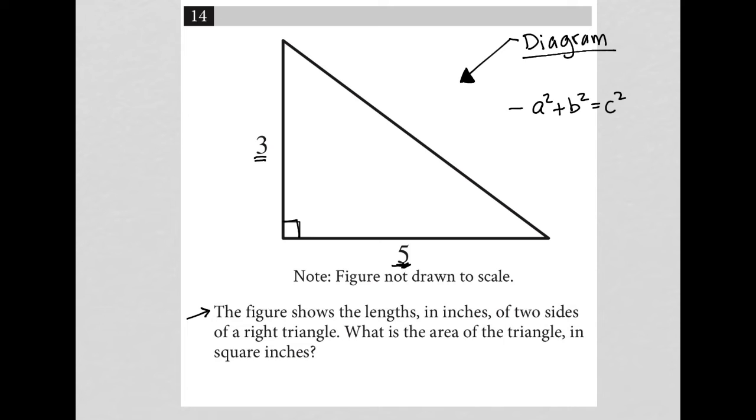Okay, so perfect. I don't need this. Why not? Because the area of a triangle is just one-half base times height. I know that my base is equal to five and I know that my height is equal to three.